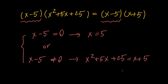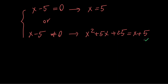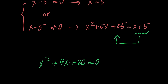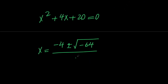So let's go ahead and solve this quadratic equation. Let's move terms to the left hand side to get x squared plus 4x plus 20 equals 0. Using the quadratic formula we're going to get x equals negative 4 plus or minus the square root of 16 minus 80, which is negative 64, all divided by 2.